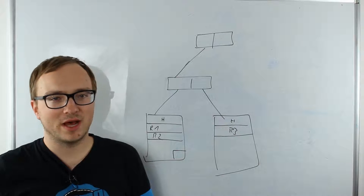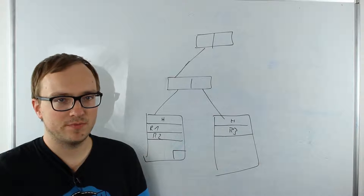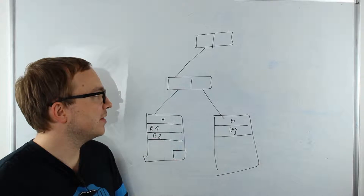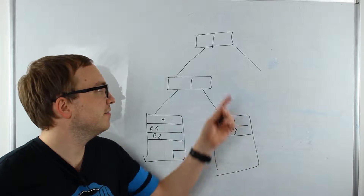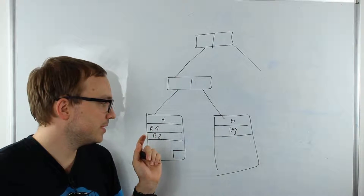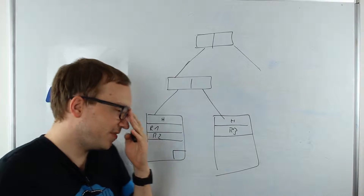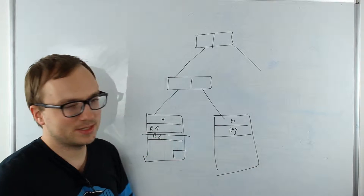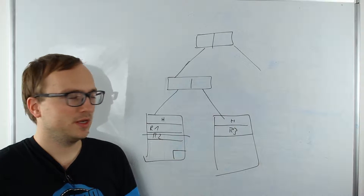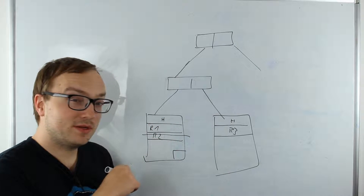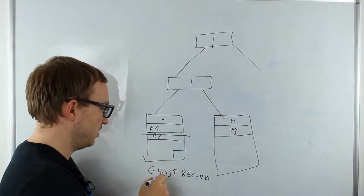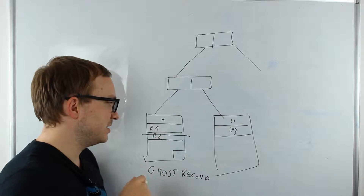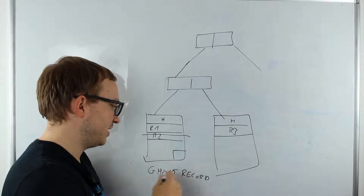With clustered indexes we have a slightly different situation. In a clustered index we have not only data pages or leaf pages, but also index pages containing pointers to data pages or intermediate nodes. In this simplified B-tree scenario with a root node, intermediate node, and data pages — if you delete a row in a clustered index, it gets flagged as a ghost record. It's still there but we can't use it.